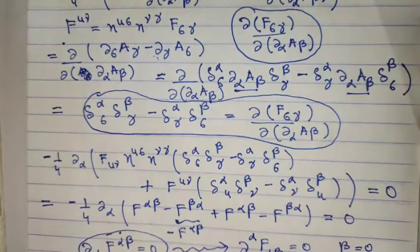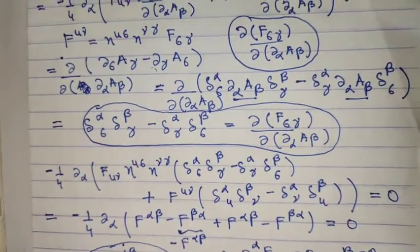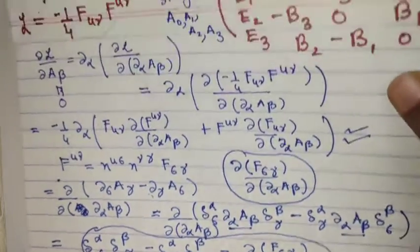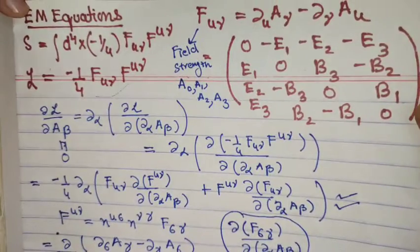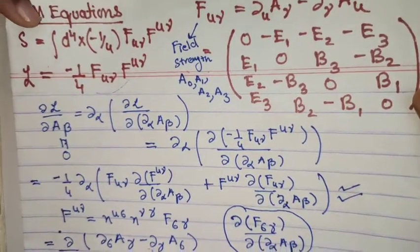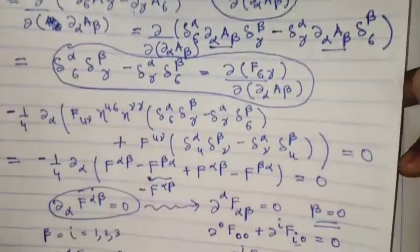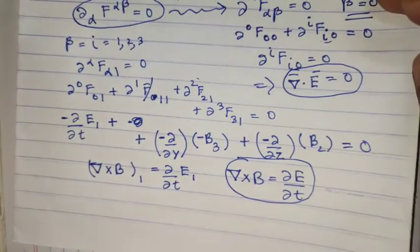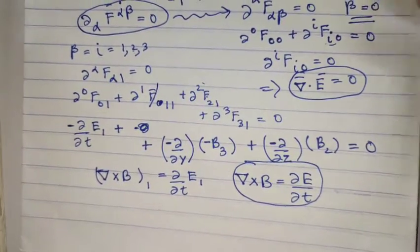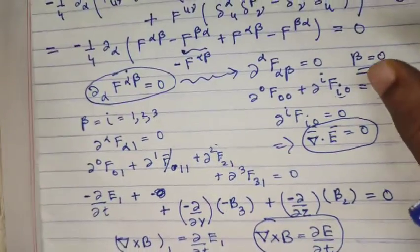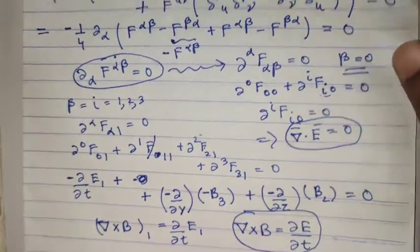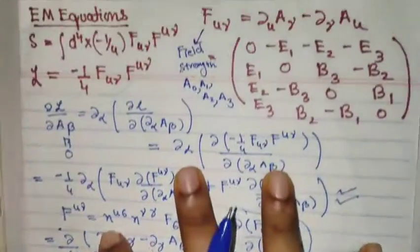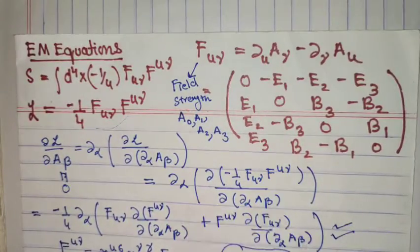So we get these two Maxwell equations from solving this Lagrangian, requiring a lot of index manipulation. The other two Maxwell equations come from something called the Bianchi identity for electromagnetism, but we will not discuss that here. That's all for this video.